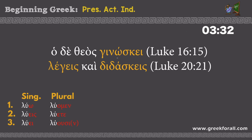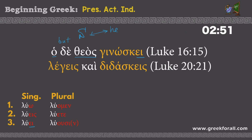Two more examples. 'Ho de Theos ginoskei.' This is our verb — we look at the endings and see the ending -ei, which we find right here: third person singular. So 'he knows' or 'she knows.' But in our example we also have a subject — 'ho de Theos,' meaning 'but God.' Whenever we have a subject, we simply substitute 'he,' 'she,' or 'it' with the subject and translate 'but God knows.' In the second example, 'legeis kai didaskeis,' we have two verbs with identical endings connected with 'kai' meaning 'and.' Here we do not have a subject, so we take it from the table — second person singular: 'you.' So: 'you speak and you teach,' or 'you are speaking and you are teaching.'